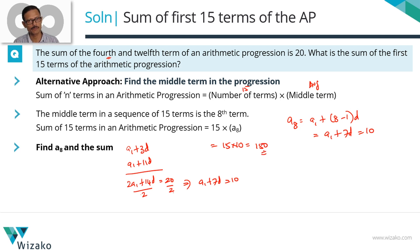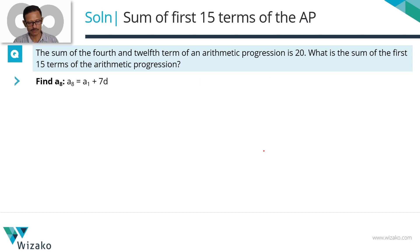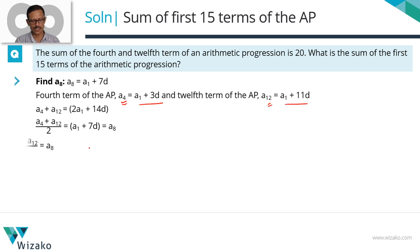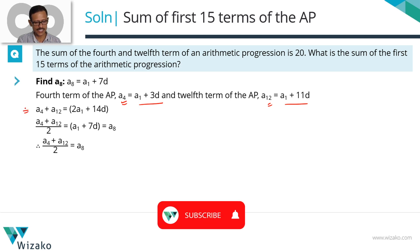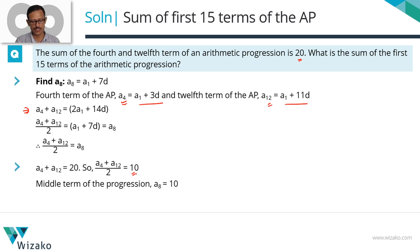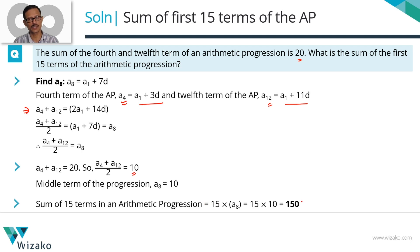The same answer as with the textbook approach. To summarize: A8 equals A1 plus 7d. A4 plus A12 equals 2A1 plus 14d. Dividing by 2, A1 plus 7d, which is A8, equals A4 plus A12 divided by 2. Since A4 plus A12 is 20, A8 equals 10. Therefore the sum of the first 15 terms equals 15 times 10, which is 150.